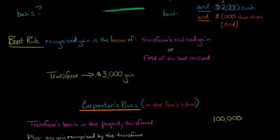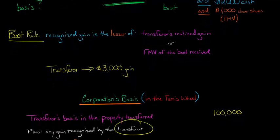The first adjustment: did the transferor, in this case you, recognize any gain? Because of this boot property, there was a $3,000 gain that you recognized, and so that gain is going to be added. We take the $100,000 and add the $3,000 gain that you recognize. Any gain recognized gets added and increases the corporation's basis in the asset.